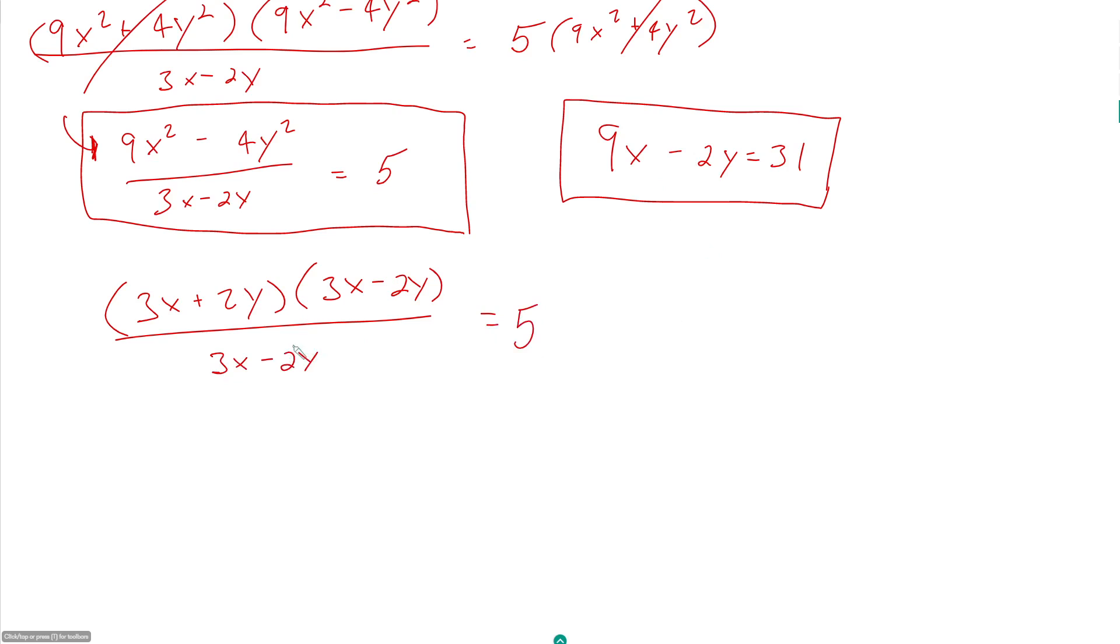Now I still have this guy here as well. So now these 3x minus 2y's cancel out, and I just have two easy-looking algebra expressions. So 3x plus 2y is equal to 5. 9x minus 2y is equal to 31.